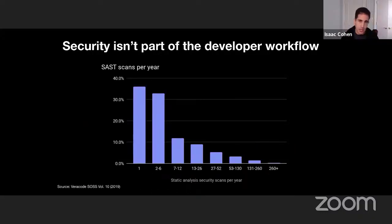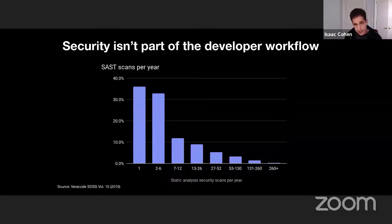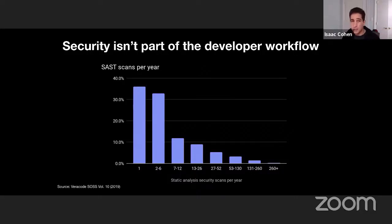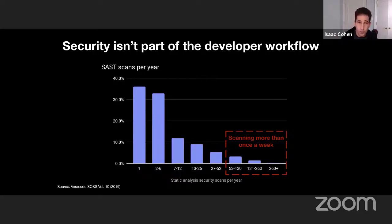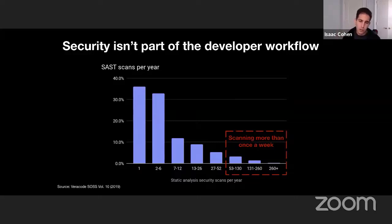The last big challenge is that security, for the most part, just isn't part of the developer workflow. We see that the vast majority of companies are still only running SAST between one and six times per year. It's actually under 10% of companies running static analysis more than once a week. So we need to start thinking about how we change that, even with the shift left we've been talking about for so long.